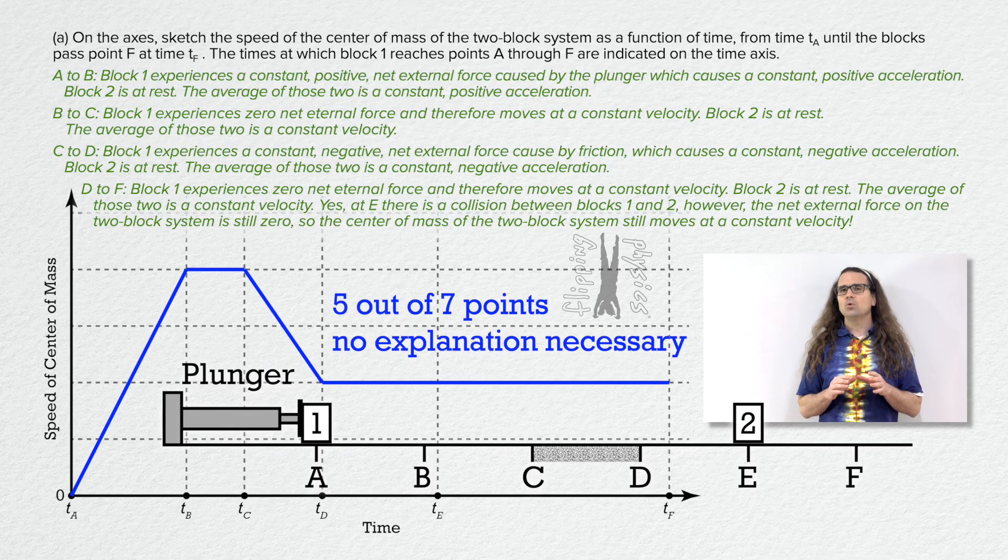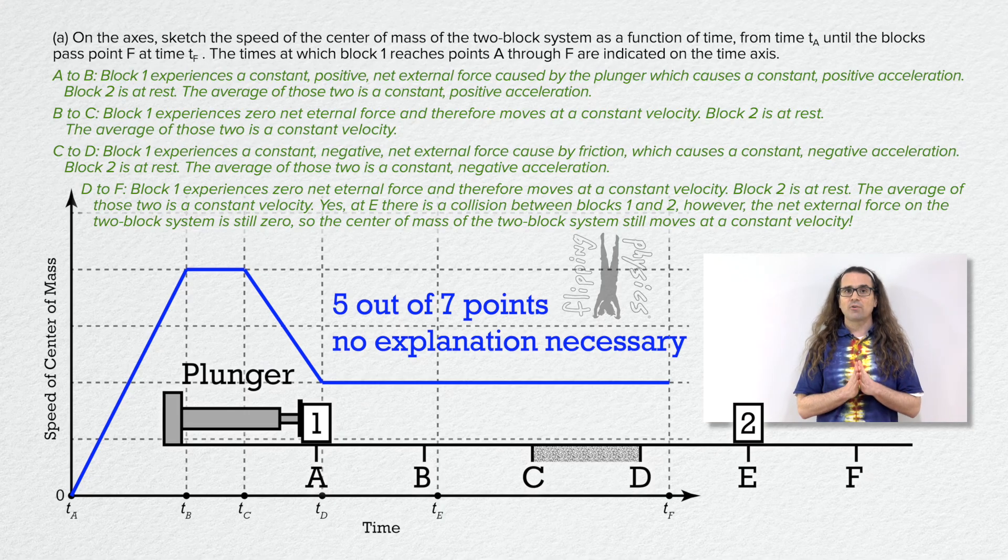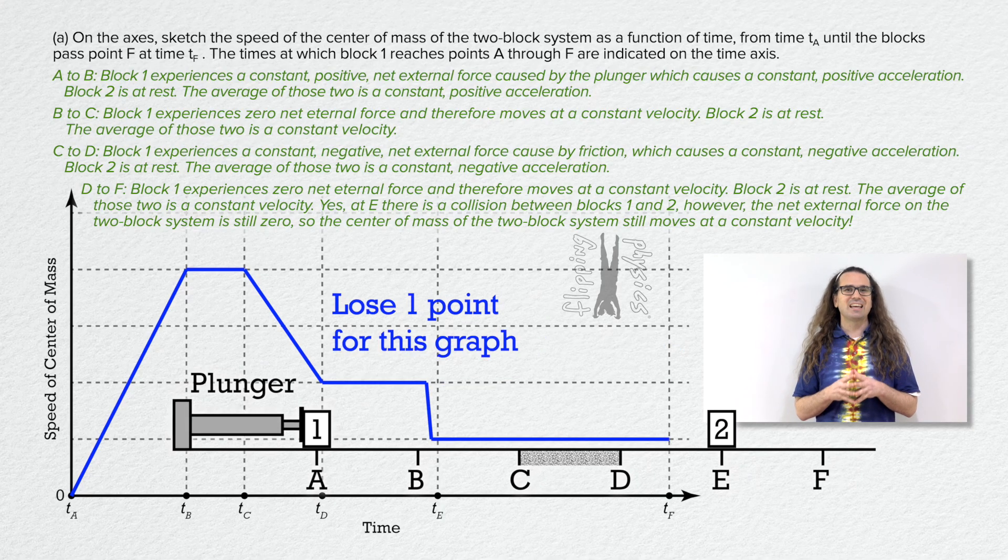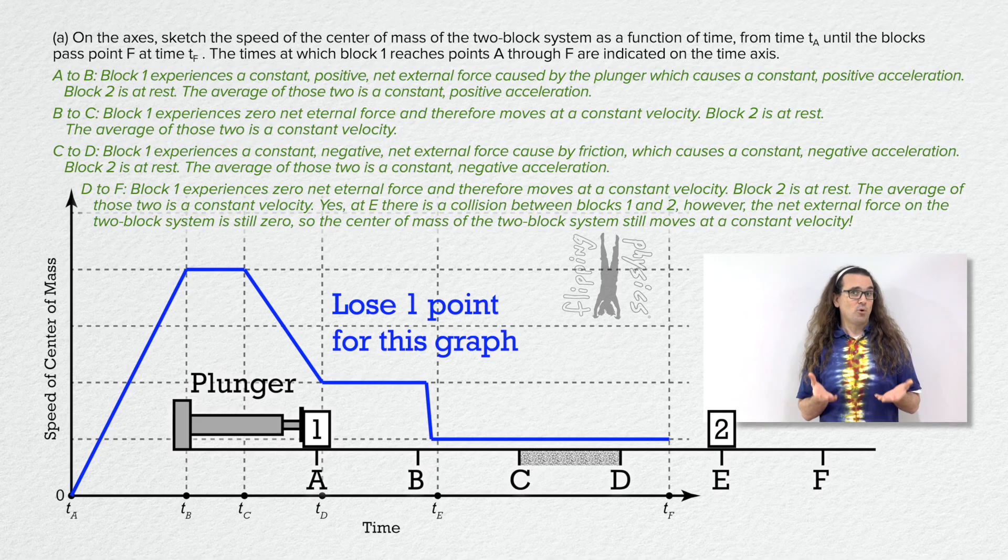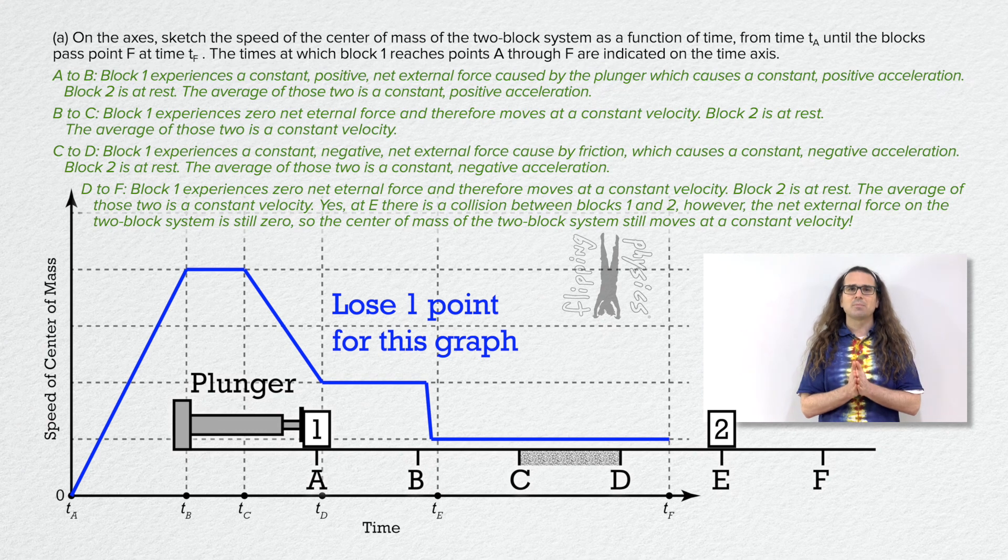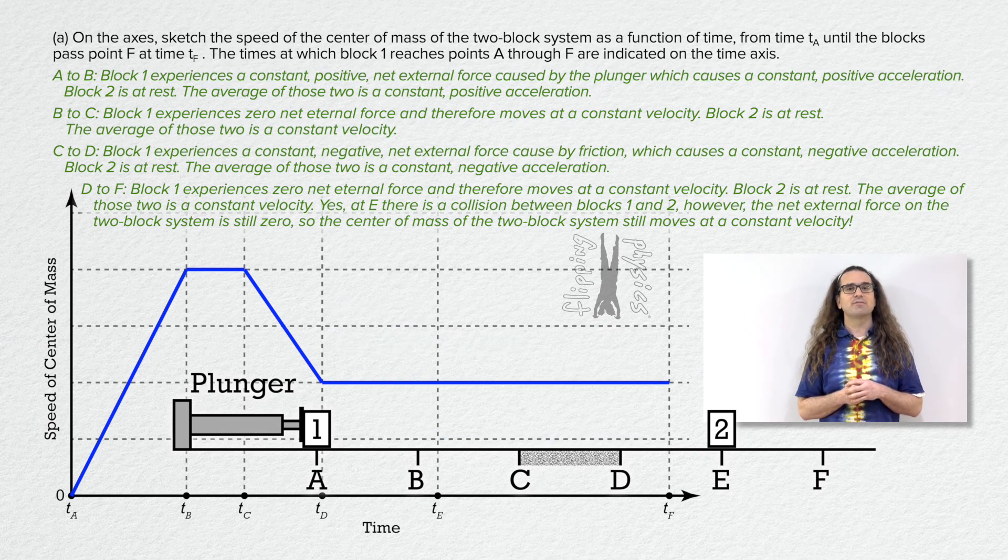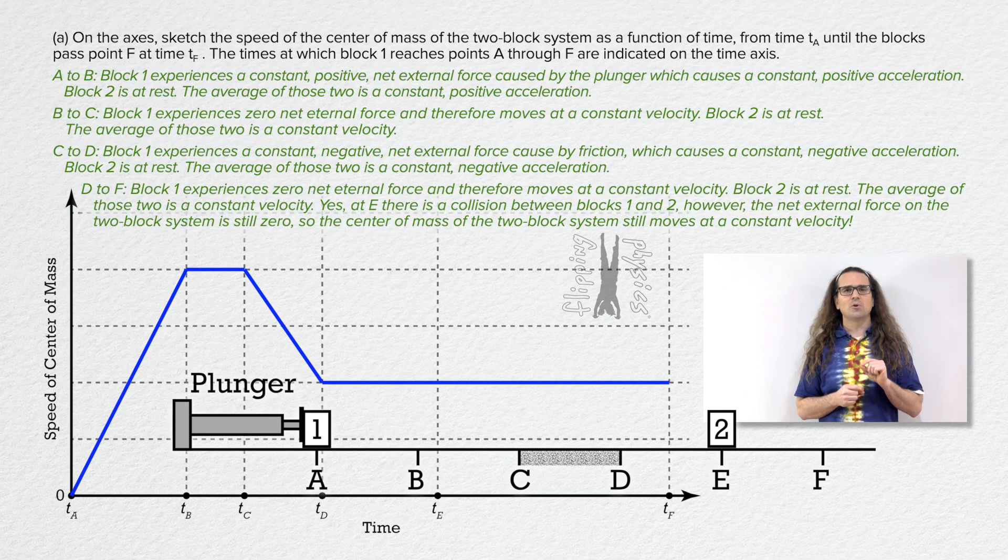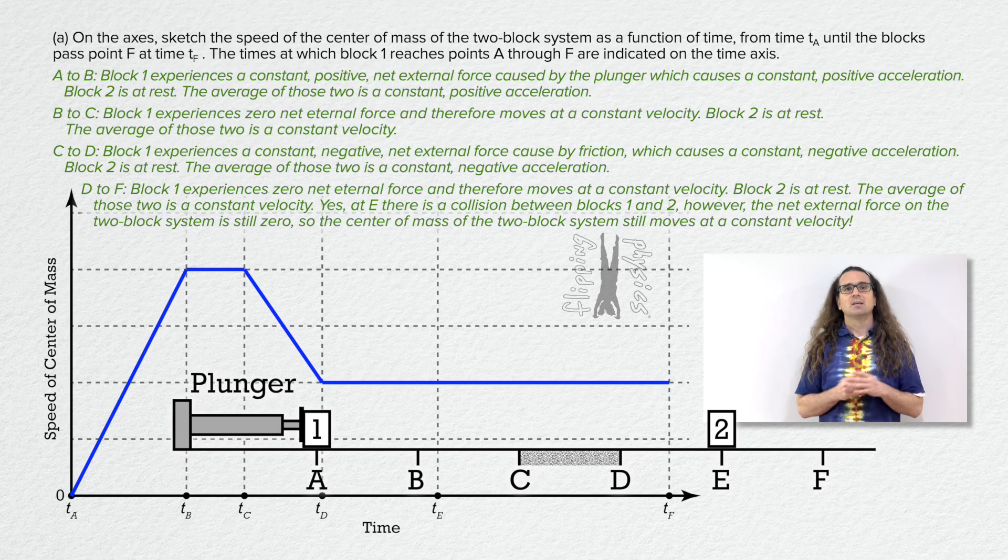Also, realize you only lose one point for incorrectly showing a decrease in velocity at time E. And I will point out that, of the three sample student solutions published by the college board for this problem, exactly zero of those students drew a horizontal line from D to F. So, if you got that wrong, you are in good company. Please, read carefully and slowly.